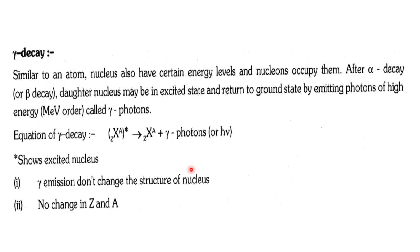In gamma decay, when an unstable nucleus undergoes alpha or beta decay, the daughter nucleus may remain in a high excited energy state. To bring that excited daughter nucleus to a stable ground state, electromagnetic waves or photons are radiated. That emission of photons is called gamma decay. In general, gamma decay involves no change in atomic number or mass number. This lecture will continue with the laws of radioactivity in the next lecture. Thank you.